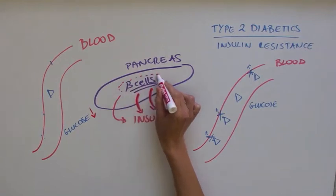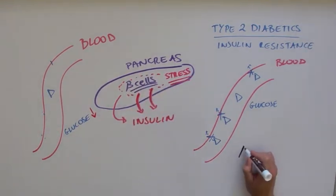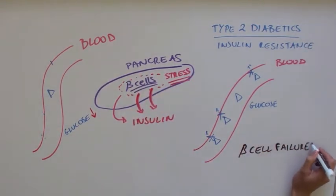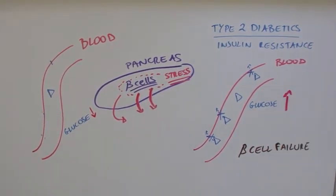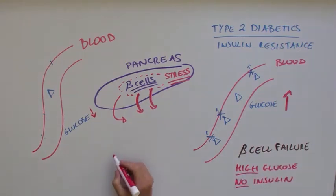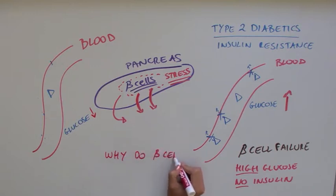This causes a lot of stress on the beta cell and eventually the patient experiences beta cell failure where the pancreas is no longer able to produce insulin and blood glucose remains high. This paper addresses the issue of beta cell failure and tries to understand why beta cells become unable to produce insulin.